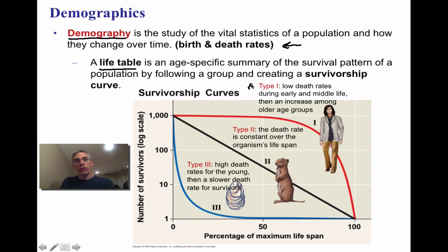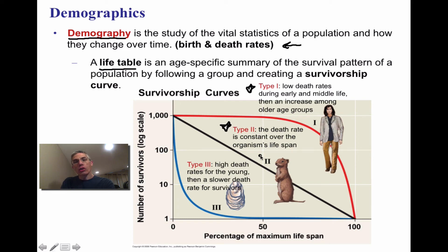Survivorship curves fall into three categories. Type 1 (e.g., humans) shows low death rates during early and middle life, with death increasing among older individuals. Type 2 (e.g., ground squirrels) shows a constant death rate throughout the organism's lifespan. Type 3 shows a very high death rate for the young — many offspring are produced but most die before maturity — though survivors enjoy a much slower death rate afterward.